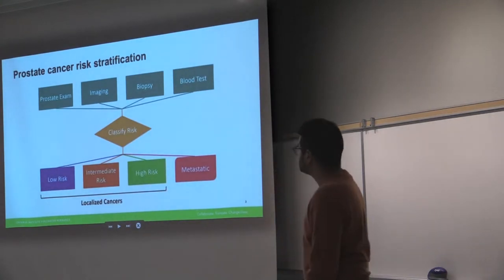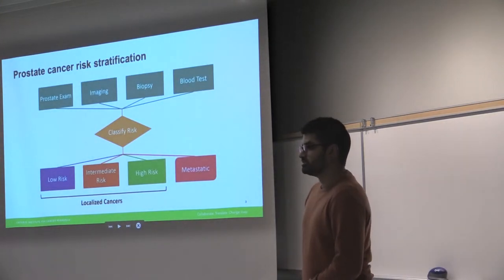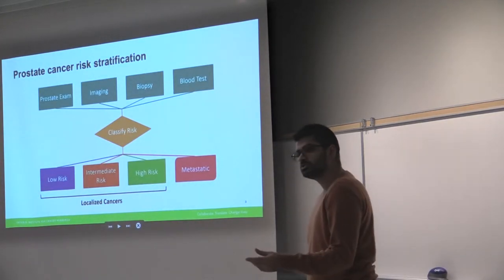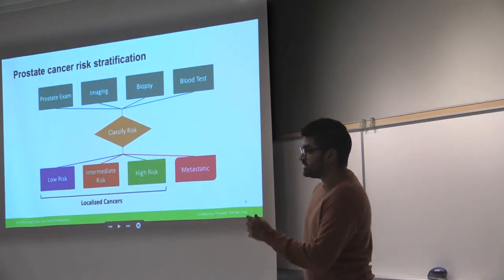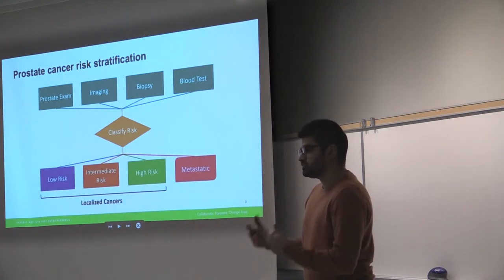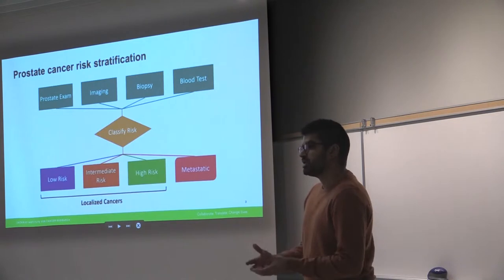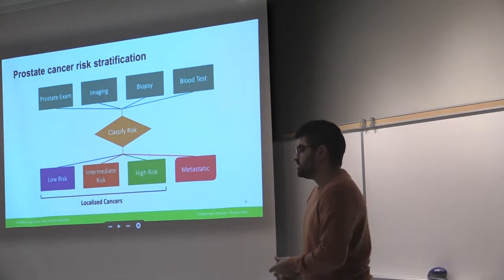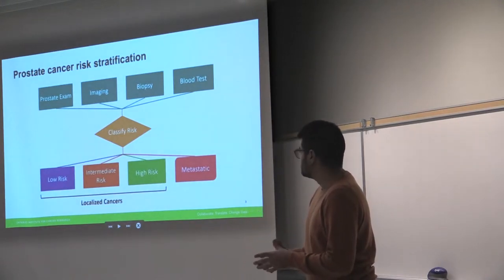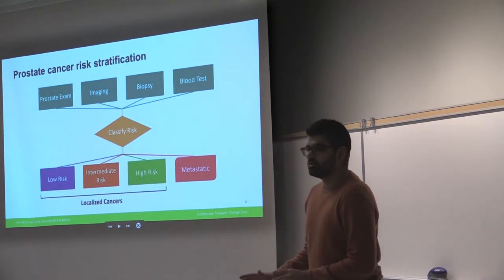So I'll talk about prostate cancer a little bit. This is what I mostly work on, and 1 in 7 Canadian men will be diagnosed with prostate cancer over their lifetime. So in this room, that's like 2 or 3 men. And right now, when someone comes into the clinic, what happens is we do basically 3 or 4 things, and we try to stratify their risk, and then we treat them based on that risk. So we'll do a prostate exam, we'll do some imaging to see how far the cancer has spread, we'll do a biopsy to actually look at the cancer cells under the microscope and see how bad they are, and then do a blood test. And we consider all of this, and then we assign patients a risk group. Usually, patients are classified into low, intermediate, or high-risk prostate cancer.